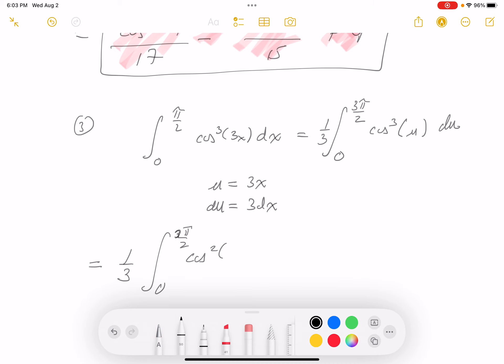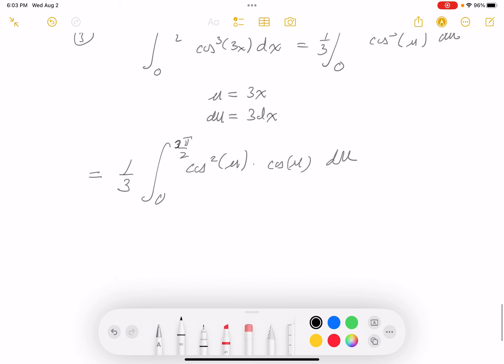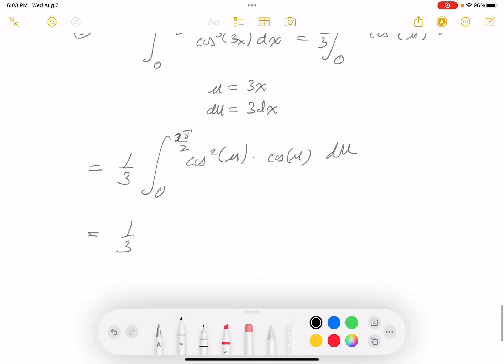Cosine squared u, and then I say cosine of u du. And keep going. One-third, 0 to 3 pi over 2, one minus... I'm sorry, I made a mistake there. One minus sine squared of u times cosine of u du.